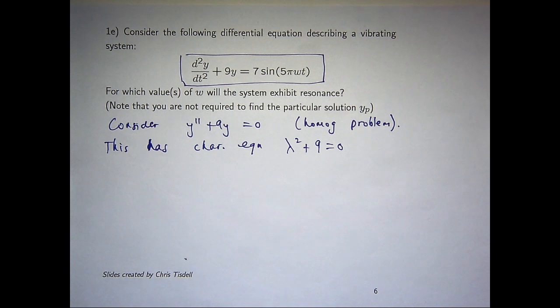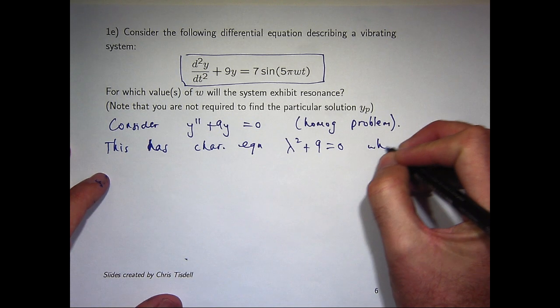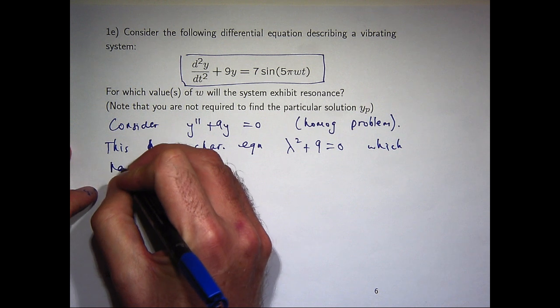So here we get lambda squared plus 9 equals 0. So if you rearrange that and solve, you're going to get complex solutions.